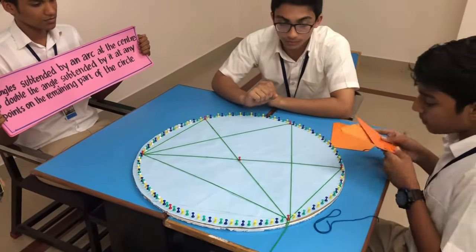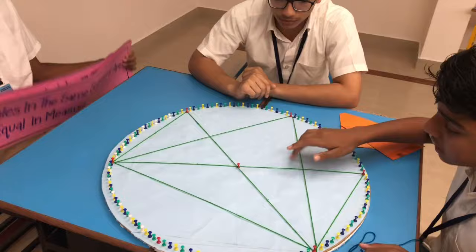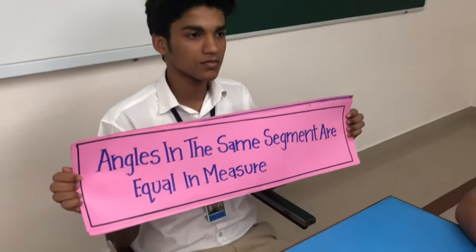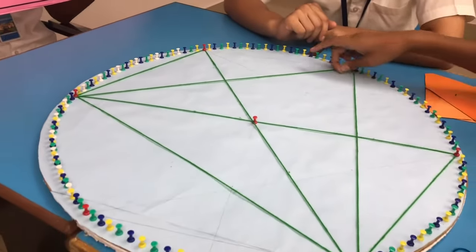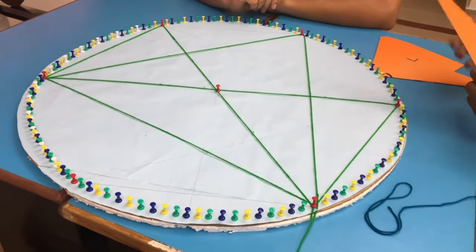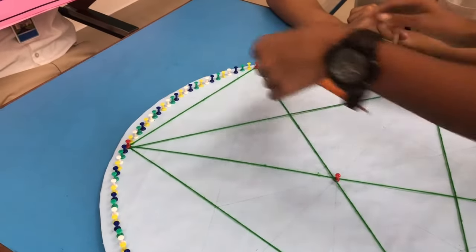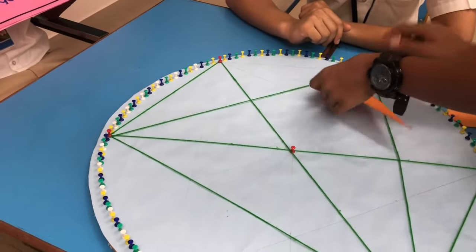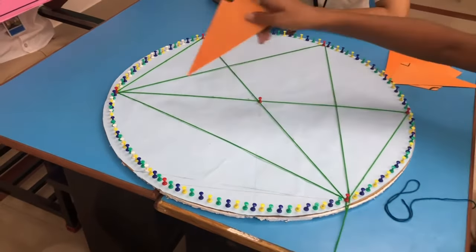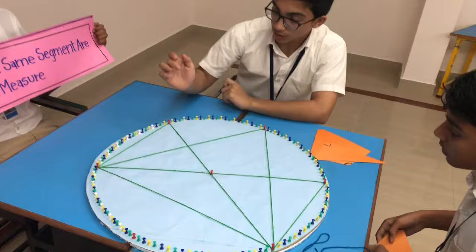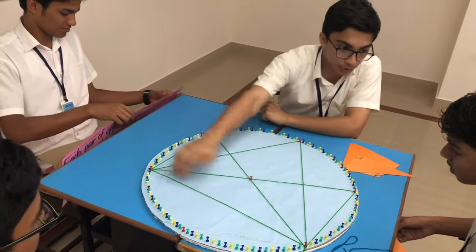The next theorem: angles on the same segment of a circle are equal. These three angles are subtended by this chord. As you can see, this angle is equal to this angle and is also equal to this angle — all subtended by the same chord. So this angle, this angle, and this angle are all equal.